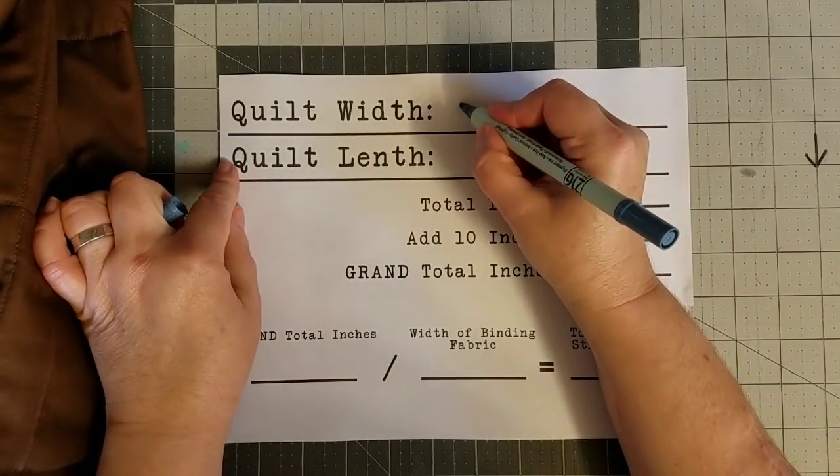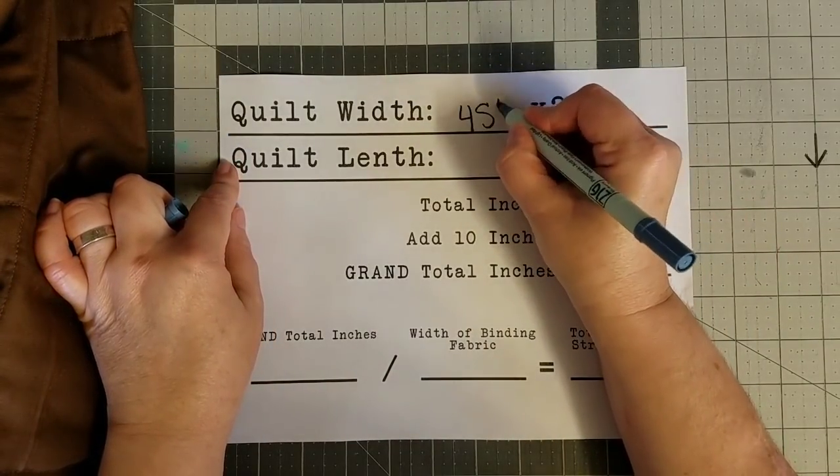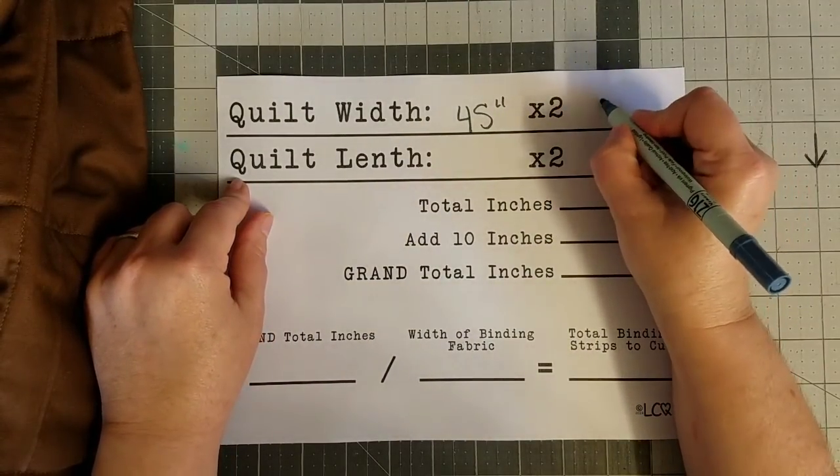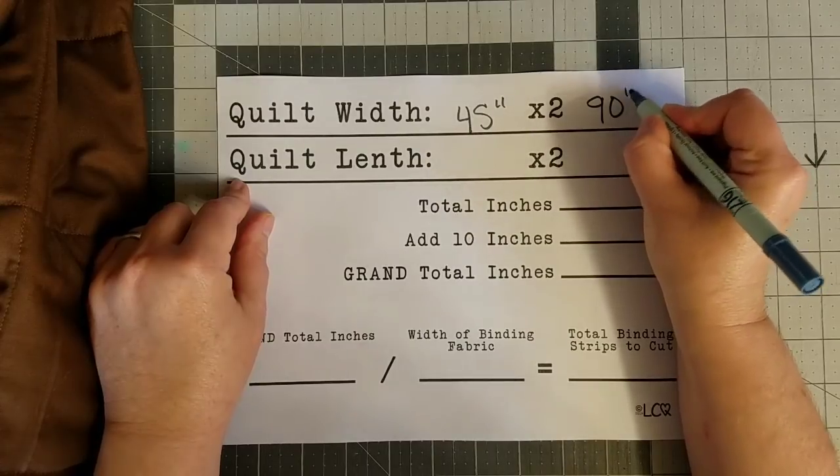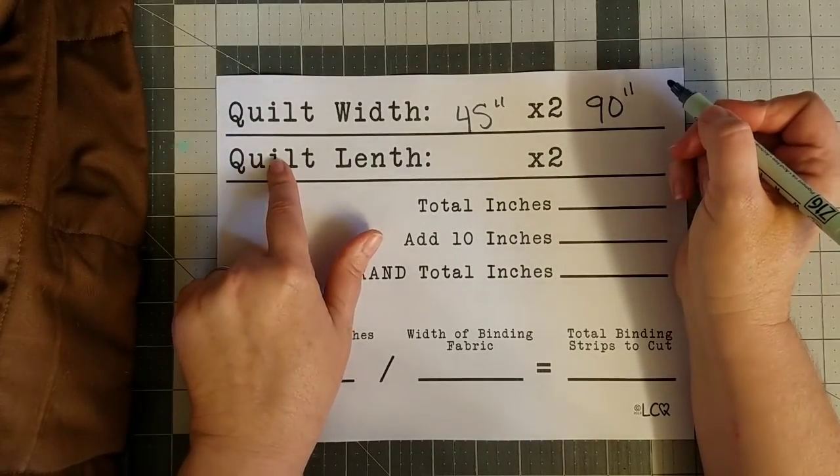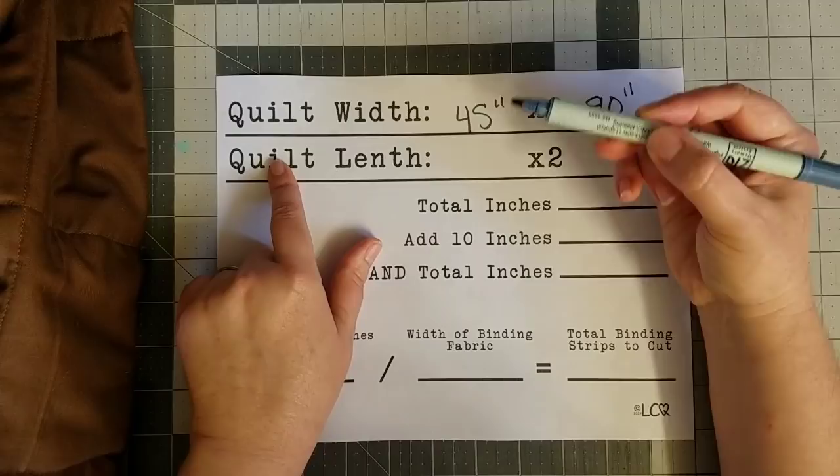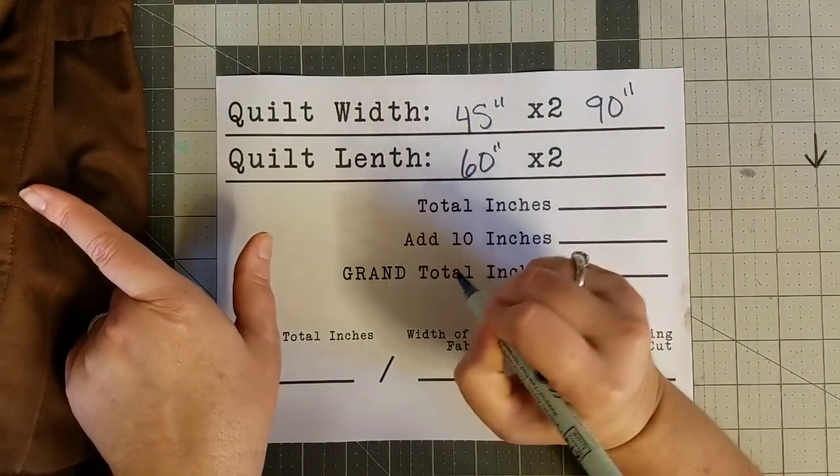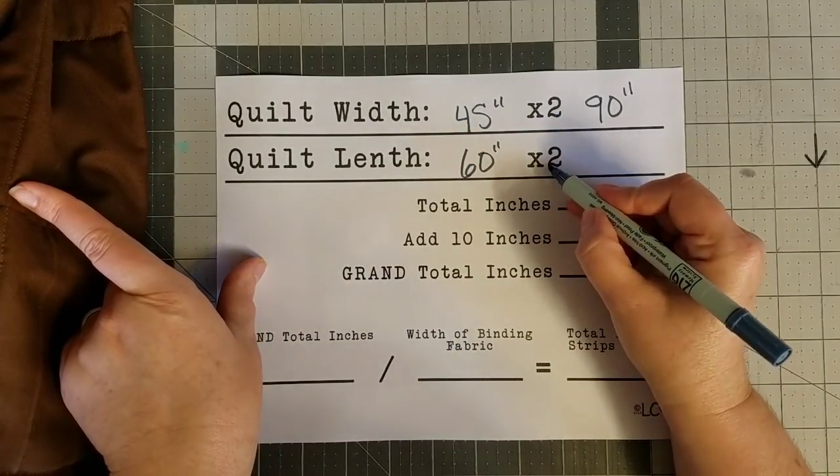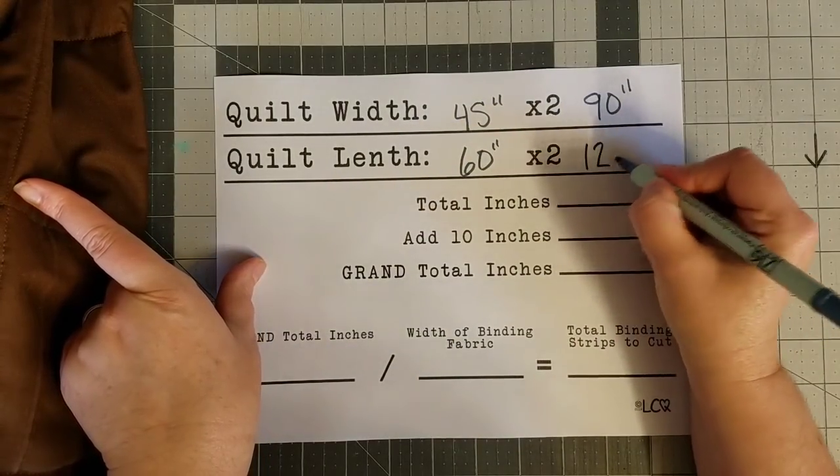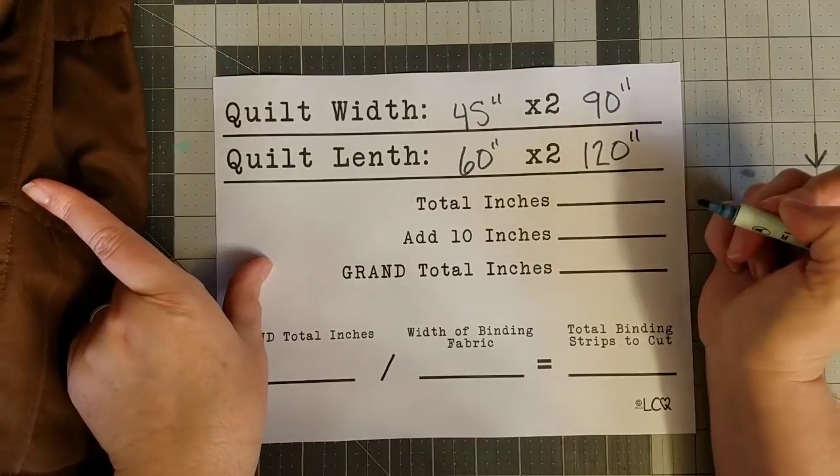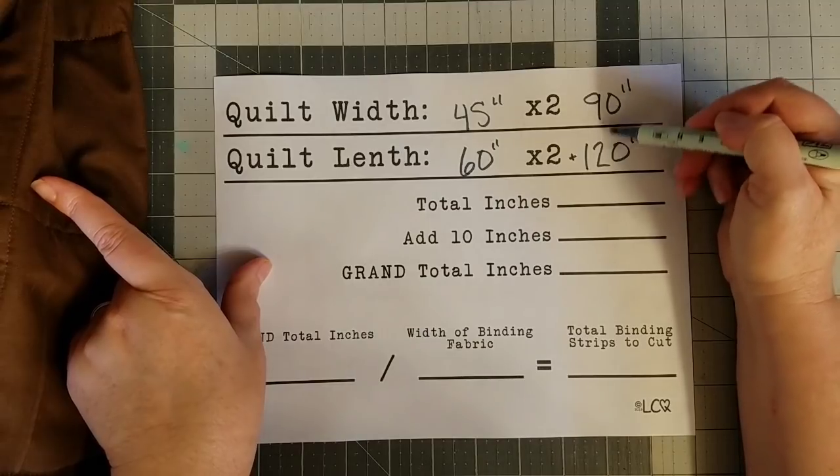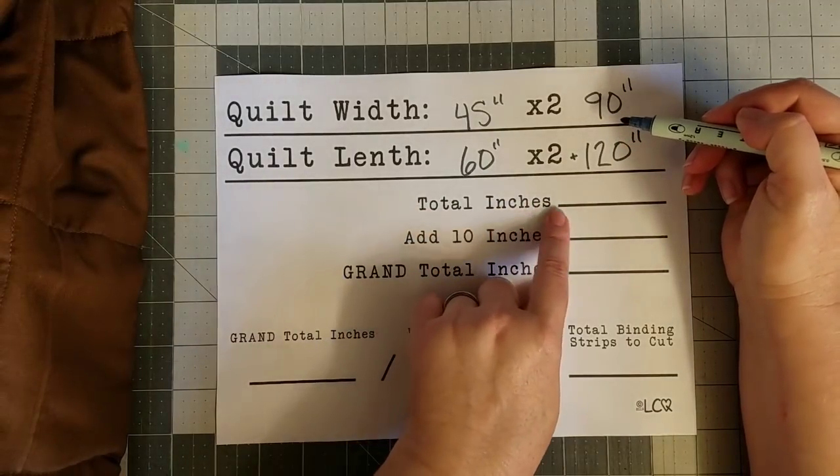We're going to times that by two, and that gives us 90 inches. The quilt length from the very top of the quilt to the bottom of the quilt is 60 inches on this quilt. We're going to times that by two, and that gives us 120 inches. Now we're just going to add a little plus sign here and we're going to add these two numbers and give us a total number of inches for our quilt.